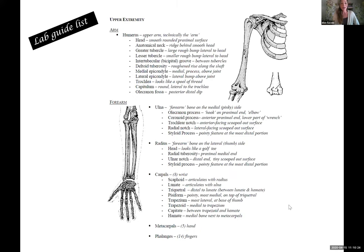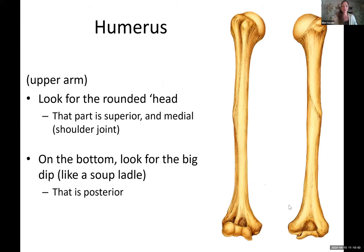On the lab guide, this is the list of features you will need to know. The humerus has quite a large number. We have the ulna, radius, the carpal list — those are just the list of the bones — metacarpals, and then the phalanges. Let's get to the humerus.